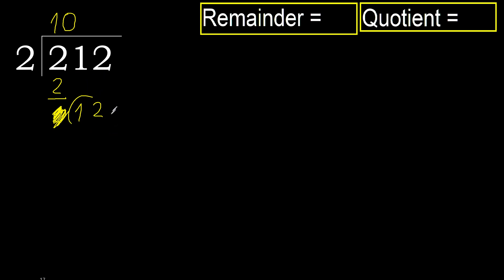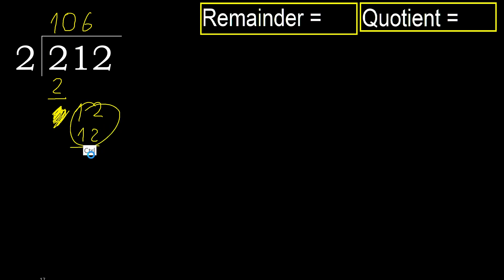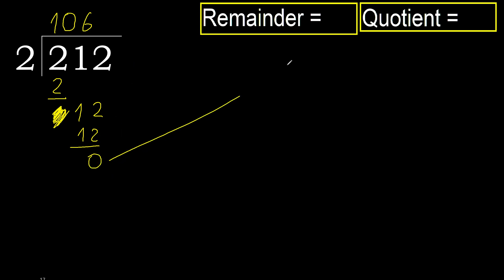12 — 2 multiplied by 6 is 12, is not greater. Perfect, subtract 0. Next — there is no number, therefore finish it.